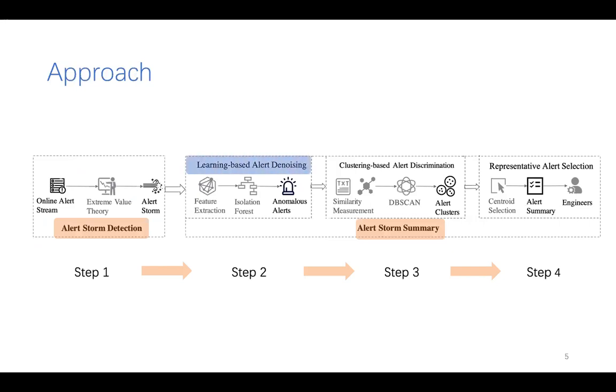Learning-based alert denoising, which aims to filter out irrelevant alerts to the failure. Clustering-based alert discrimination, which aims to divide the alerts into different groups. And representative alert selection, which aims to extract the most typical alert from each cluster to recommend to engineers.